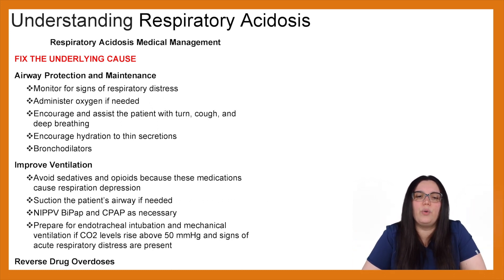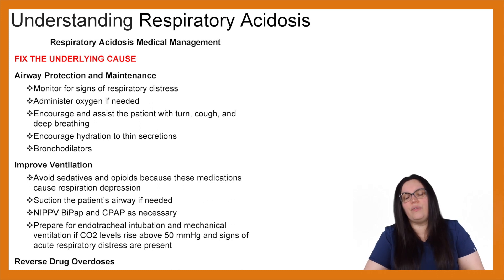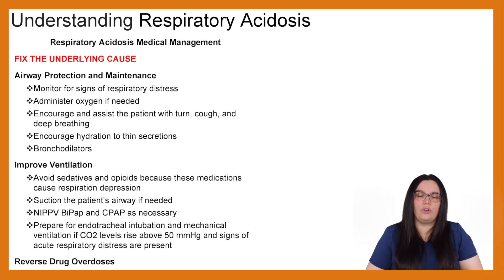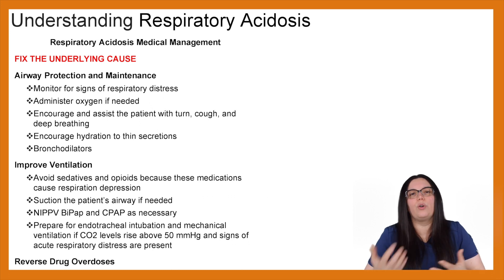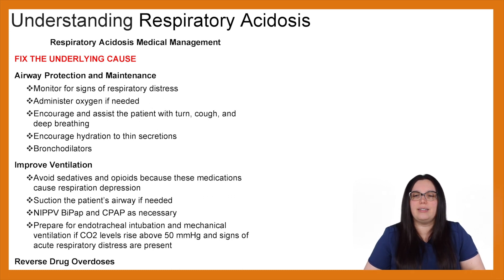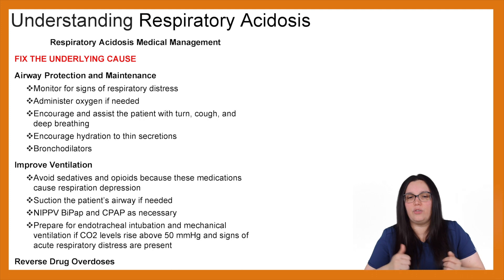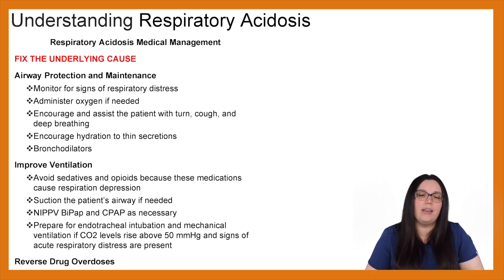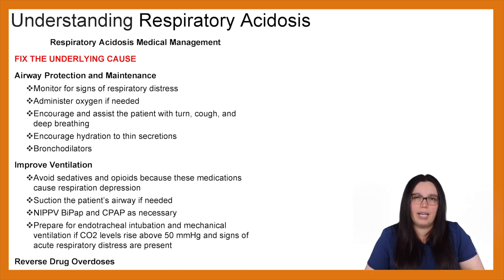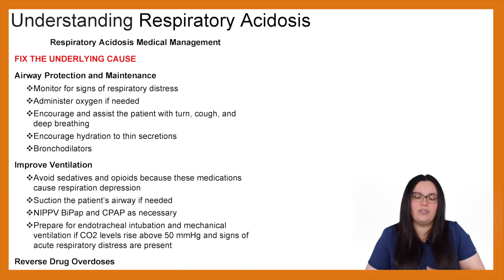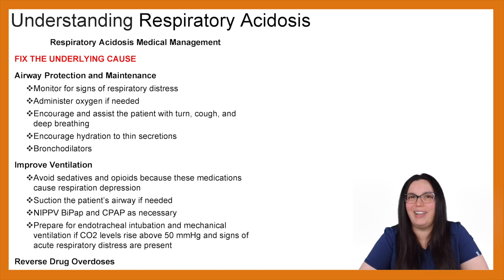Lastly, we're going to reverse drug overdoses. If it's an opioid overdose, we give Narcan. If it's a benzodiazepine, we give flumazenil. If it's alcohol intoxication, we can give fluids or dialysis. There are a variety of reversal and supportive treatments available depending on what the underlying cause is.